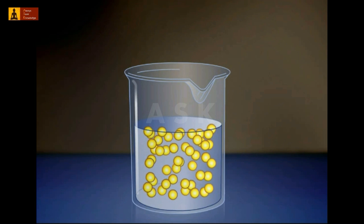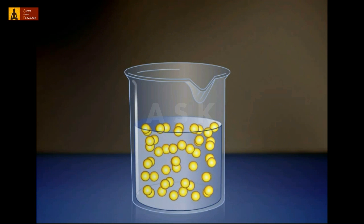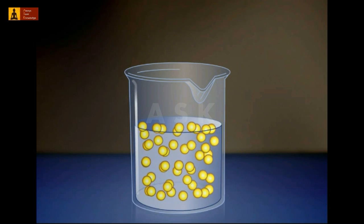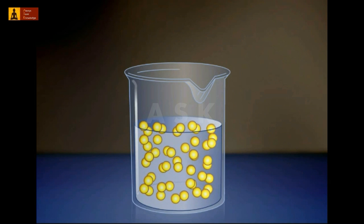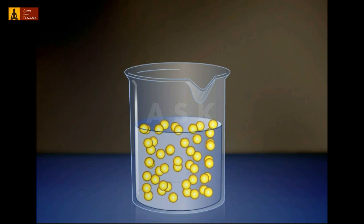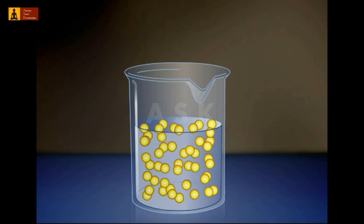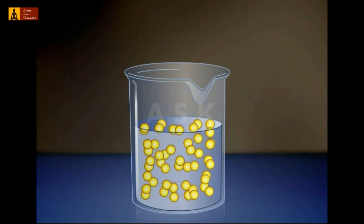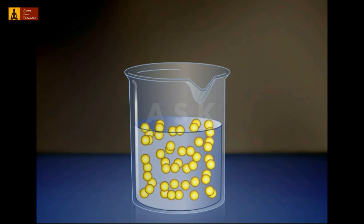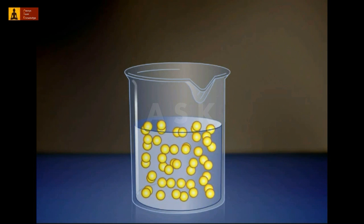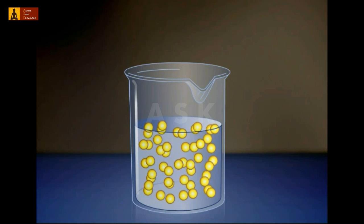The rate of diffusion is affected by temperature, size of molecules, and the steepness of the concentration gradient. Although not specifically shown in this animation, this is one of the processes whereby materials are exchanged between a cell and its environment.